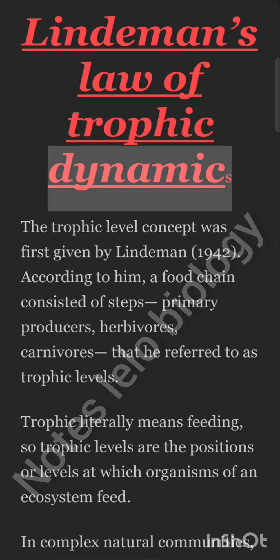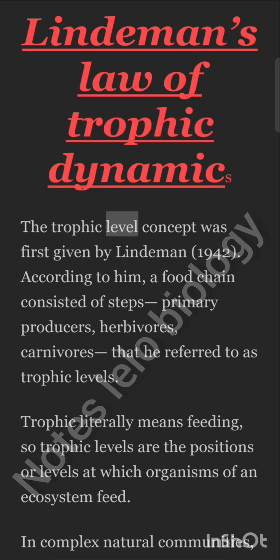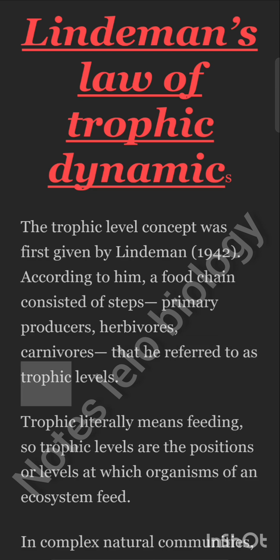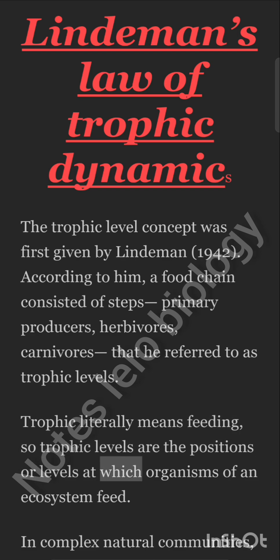Lindemann's Law of Trophic Dynamics. The trophic level concept was first given by Lindemann in 1942. According to him, a food chain consisted of steps — primary producers, herbivores, and carnivores — that he referred to as trophic levels. Trophic literally means feeding, so trophic levels are the positions or levels at which organisms of an ecosystem feed.